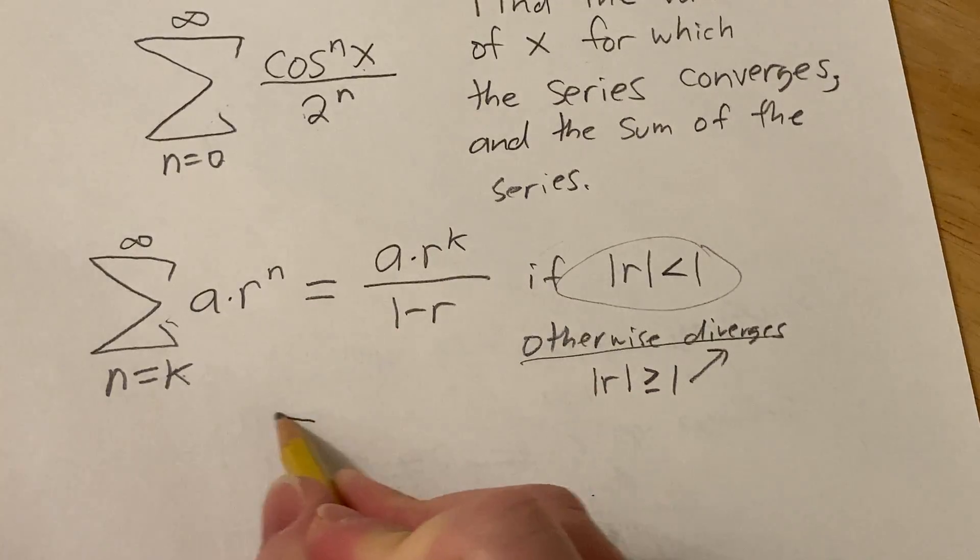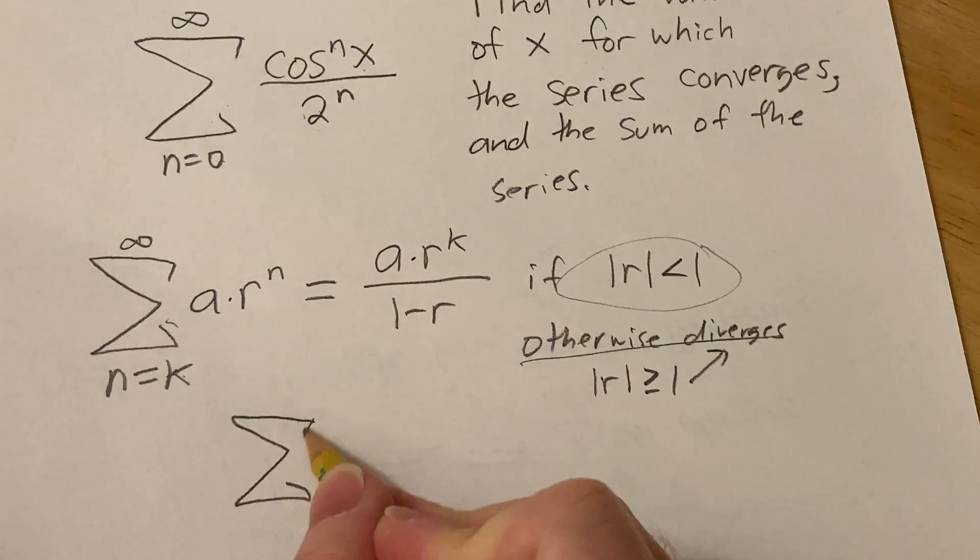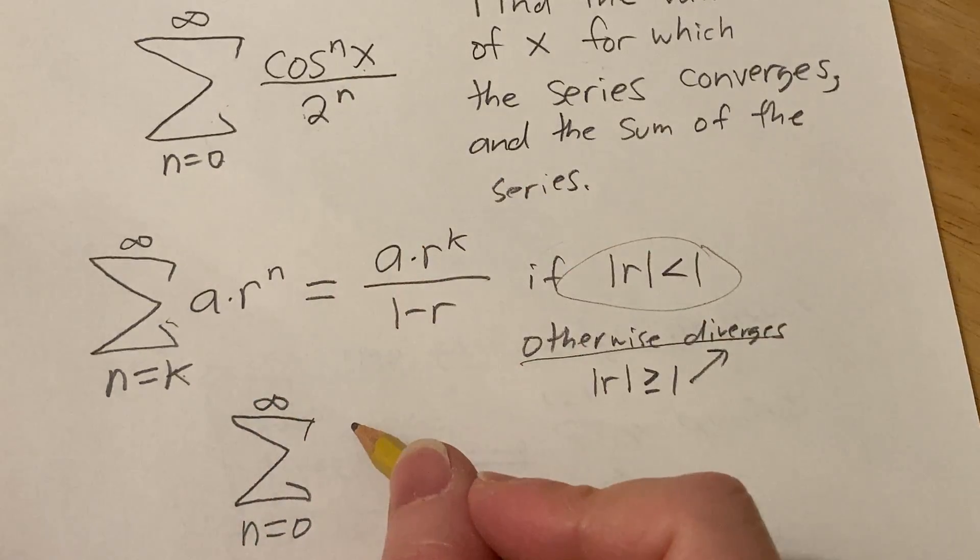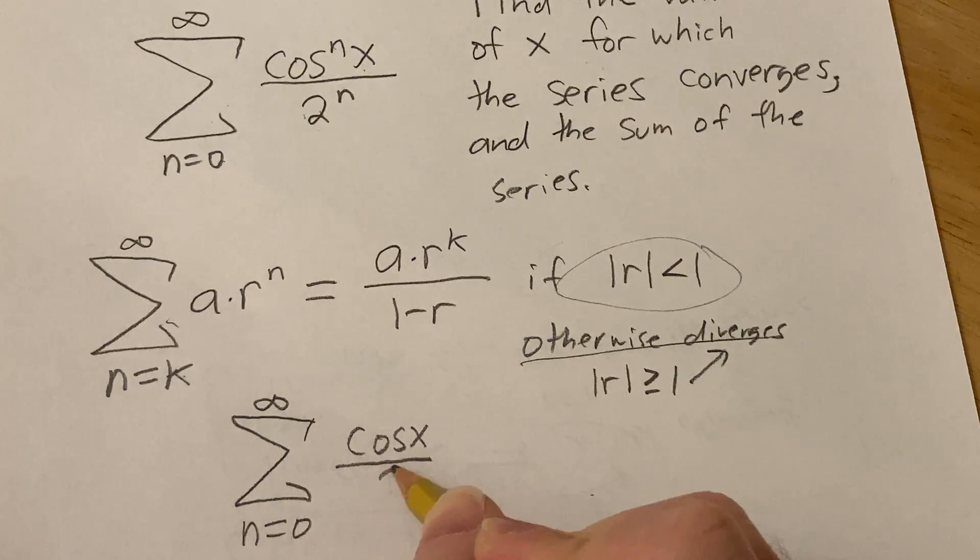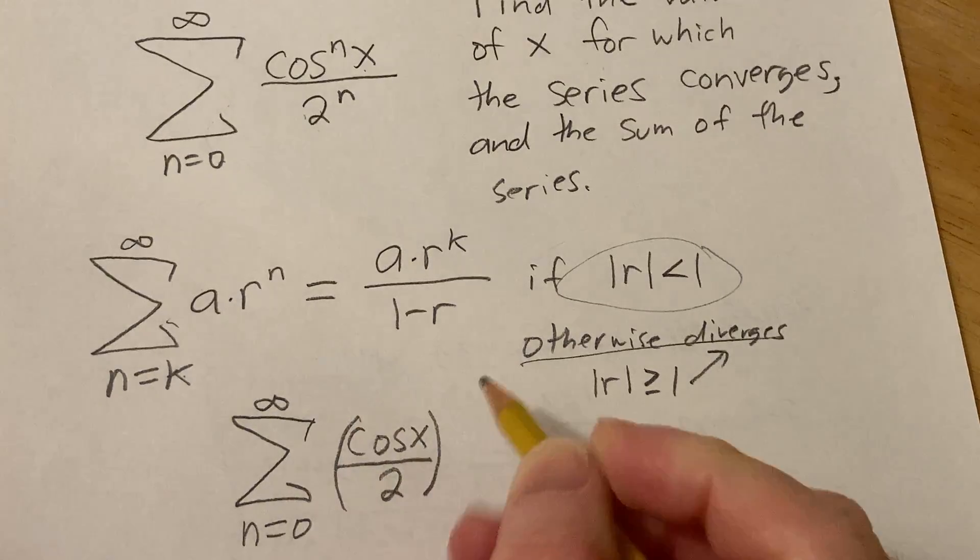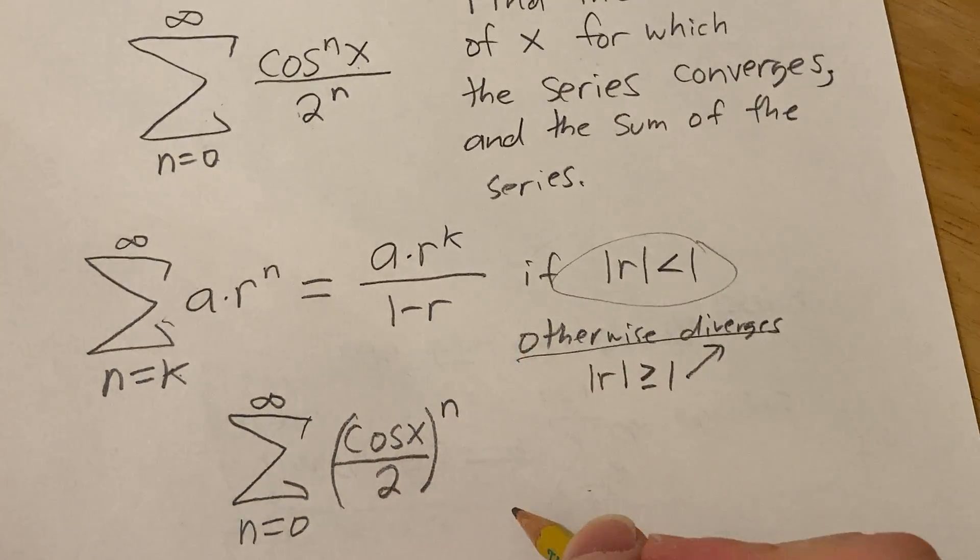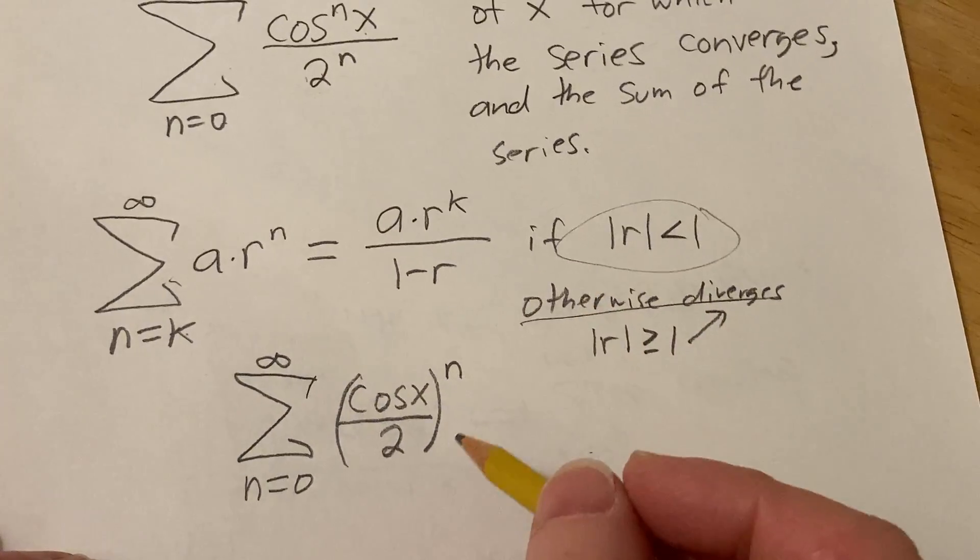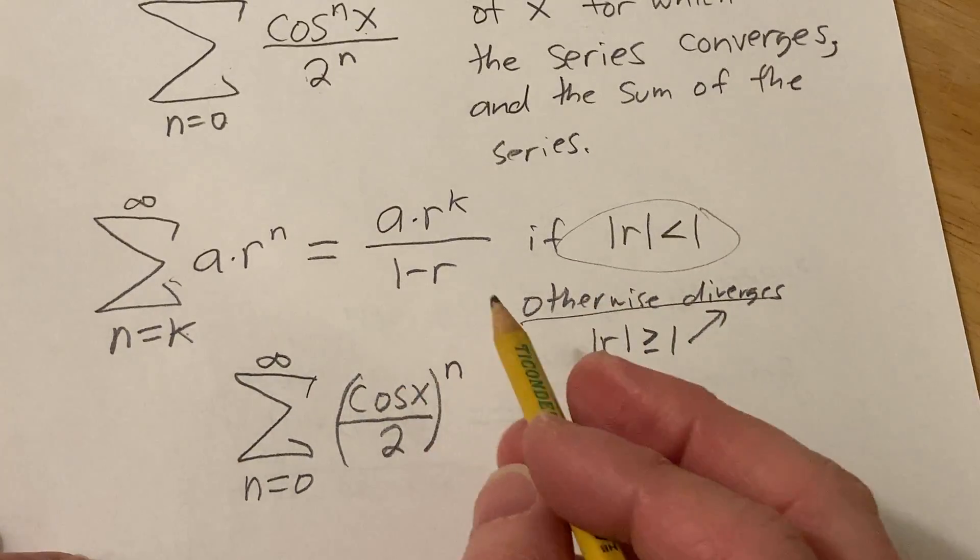So I'm going to go ahead and write it again. We have the infinite sum, as n runs from 0 to infinity, and I'm going to write it as a single fraction like this. It's really cosine of x over 2, and the whole thing is to the nth power like this, right? Because you're just raising each piece to the nth power. And so now you can clearly identify what r is.